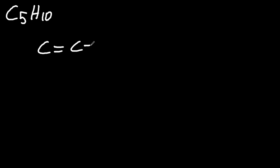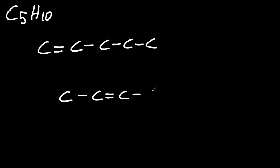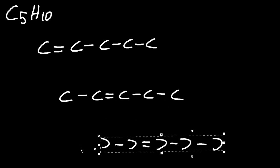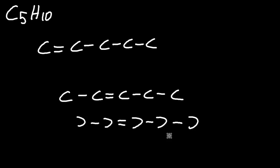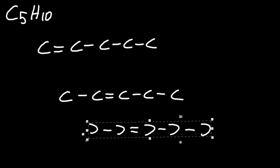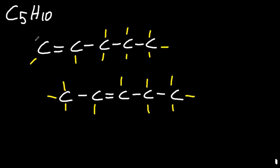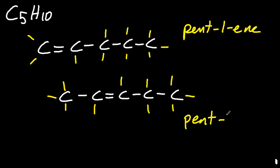Pentene — CnH2n, the alkenes. You've got pent-1-ene, pent-2-ene. Pent-3-ene? No, pent-3-ene is just pent-2-ene, so I'll throw that away. Now I'm putting the bonds in — every carbon must have four bonds. But I've not put the hydrogens in. You have to put the hydrogens in, or you'll lose a point in your IB exam.